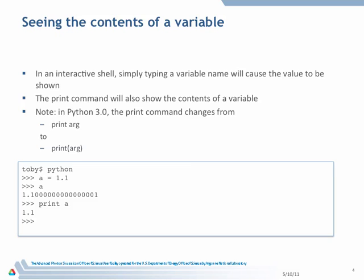So how do we see what's inside a variable? If we are in an interactive shell, for example by typing IPython or Python, and we type the variable, it comes back with the contents of that variable. If you're working in a script and you want to see the contents of the variable, then you need to print it. So either of these will work. What's the difference here? Why is this - I've given it 1.1 and it comes back with something that's not exactly 1.1?